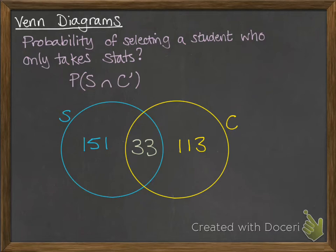Those things have to both be true at the same time. It's not one or the other, like we saw with union. They have to both be satisfied simultaneously. So the students that only take stats and don't take calculus, that's obviously 151. And we're doing this one as a probability. So we want that as a fraction out of our total.